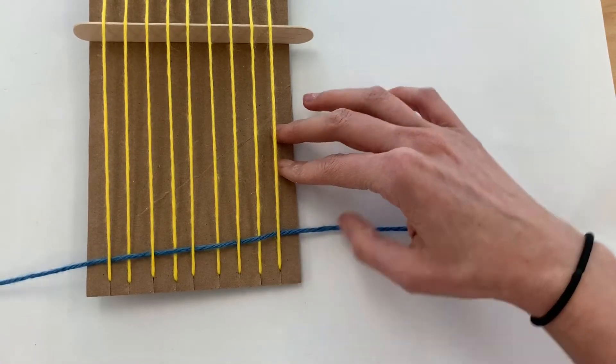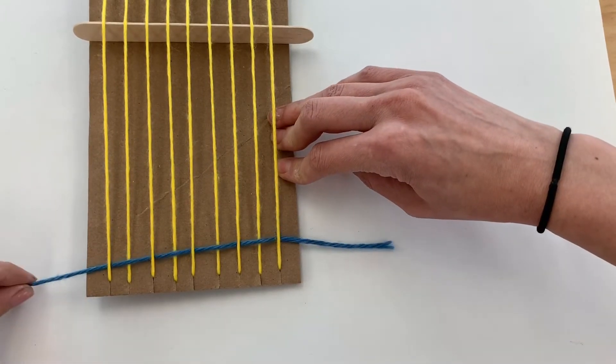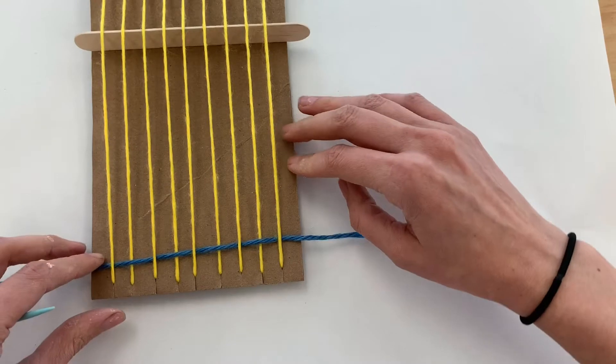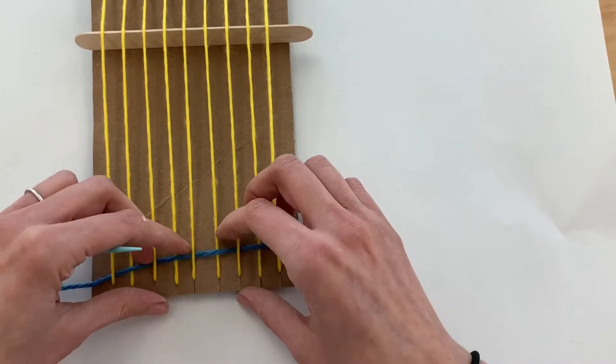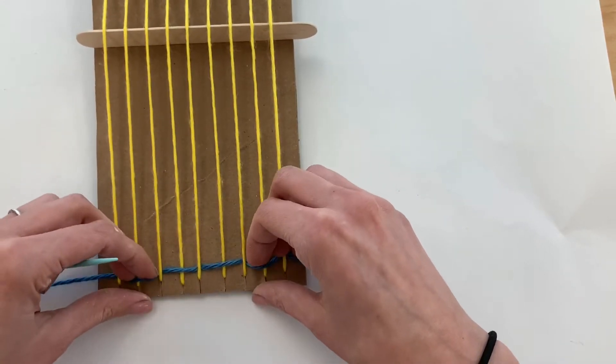Then I'm going to pull it all the way through, but when it gets towards the end, I'm going to slow it down because I don't want to accidentally pull all the way through. When I've got this little tail left over, all I'm going to do is push it down to the bottom.